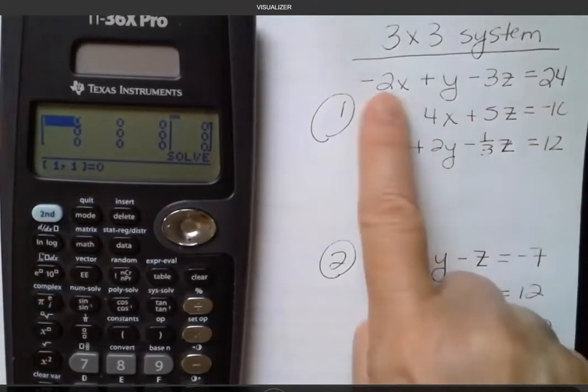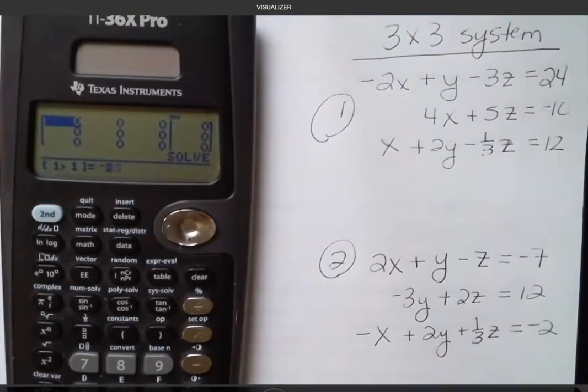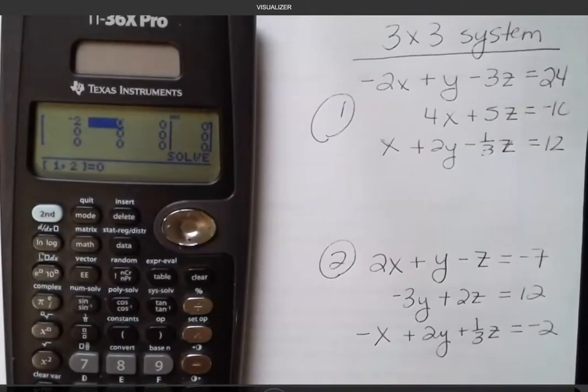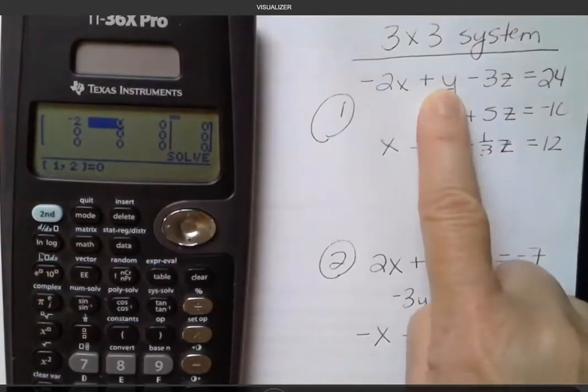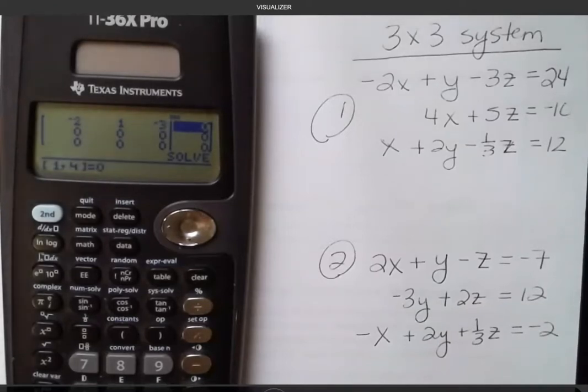So as I put those in, I'm going to make sure I include the negative signs if there are any. So I have negative 2, and I'm just going to hit enter. This first one comes out to be a really messy number, so I just want to show you how nice it would be to not have to do that by hand. The second value here, because we don't see a number, that's going to be 1, and then we have negative 3, and then we have 24.